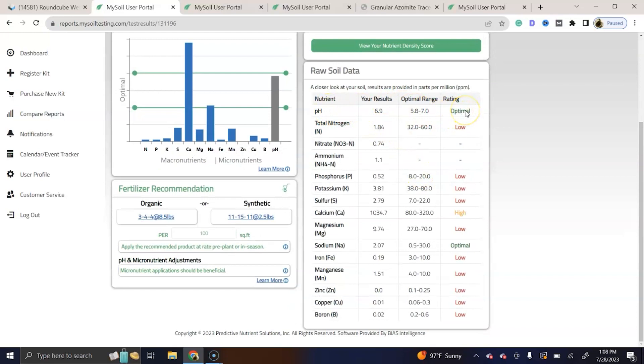We have our pH is optimal. And it showed optimal and the pH was very close in each of the areas that we sampled. And all three areas were high in calcium.